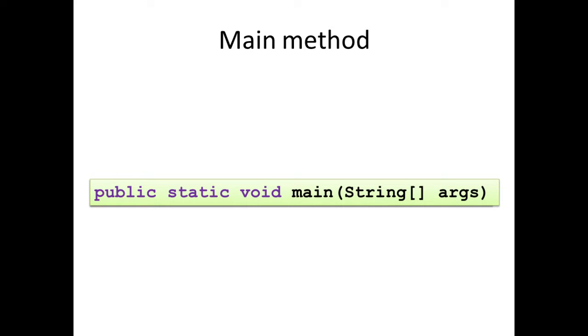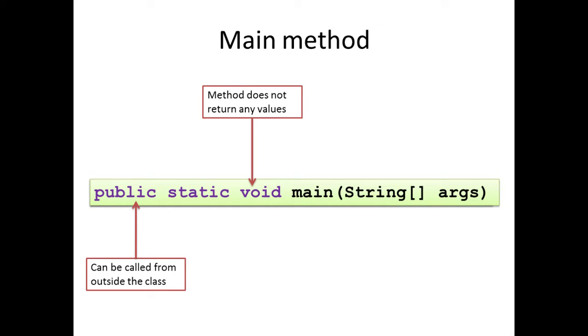Well at this point we understand what most of this line means. Public means that it can be called from outside the class. If this is a method that's going to be called automatically when the Java application runs, then this makes sense that it should be public. Void means that the method doesn't return anything, and again for the initial method that runs when we start our application, this makes sense because there's nowhere for it to return any values to. Main is the name of our method and args are an array of strings. These are the method parameters. If we were to run this application from a command prompt including command line arguments, then these would be accessible to us as an array called args. So what about this elusive word static?